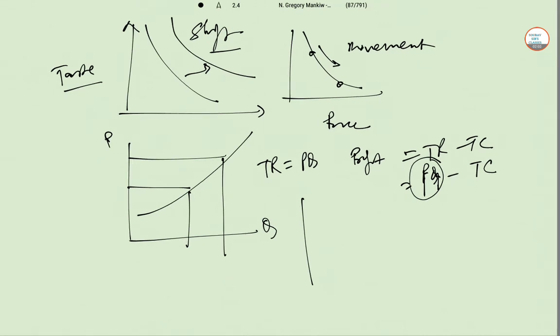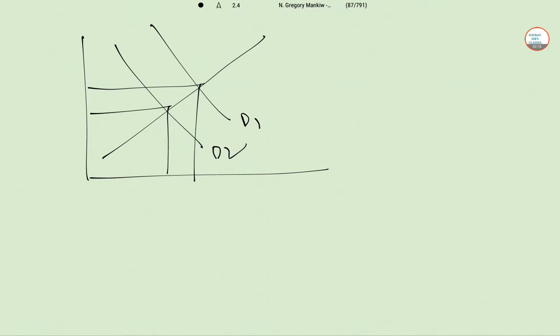So here supply is unchanged. The demand for pizza will also fall because of the enhancement of the prices of beer. Because the complimentary good prices are increasing, people will not be interested to buy it more. So as a result of that there will be a leftward shift of the demand curve.